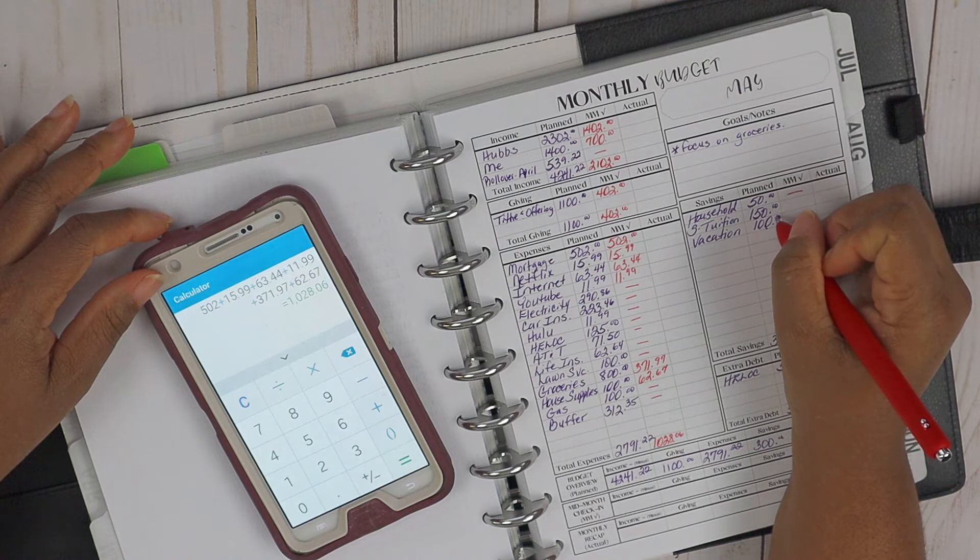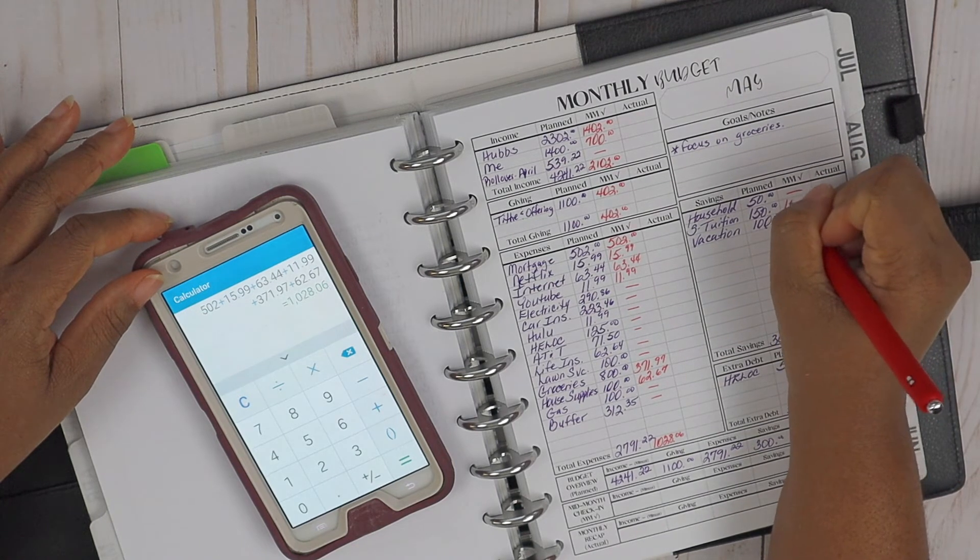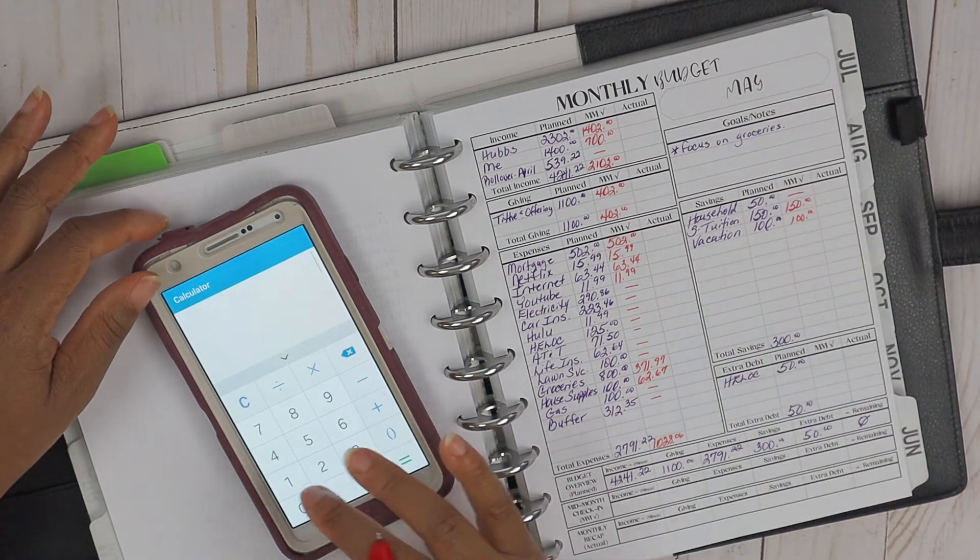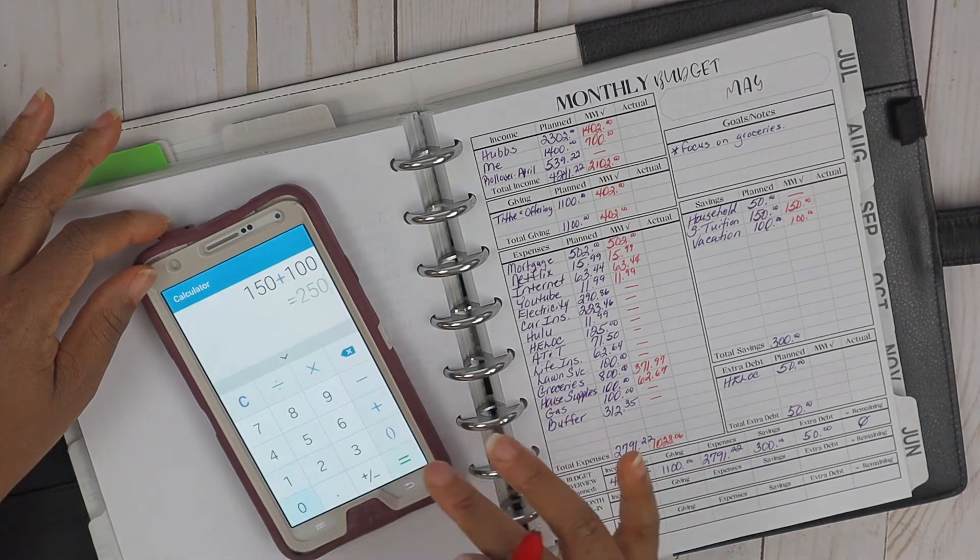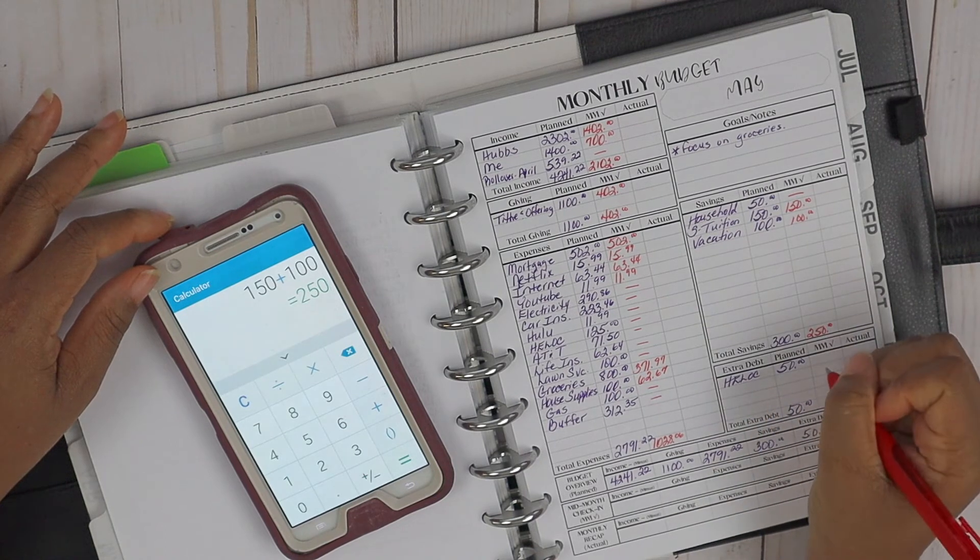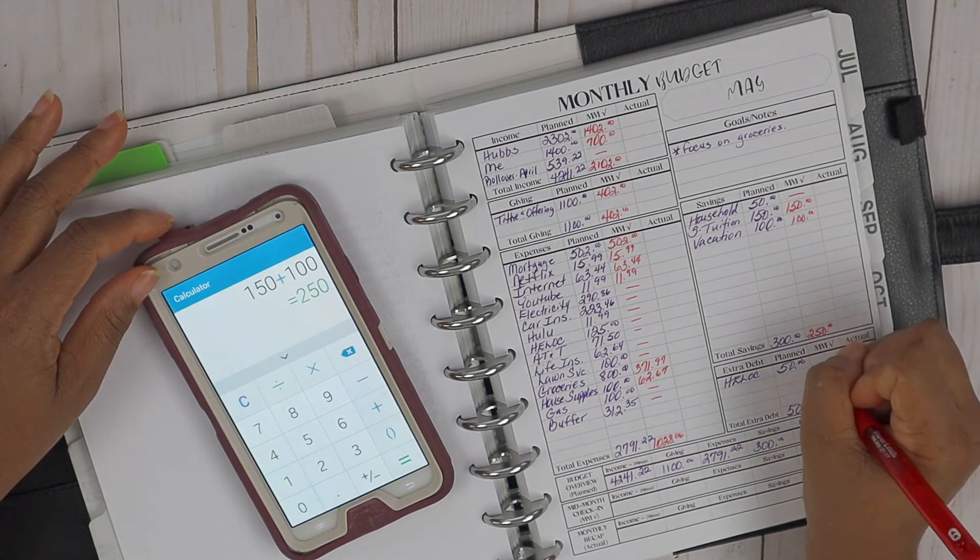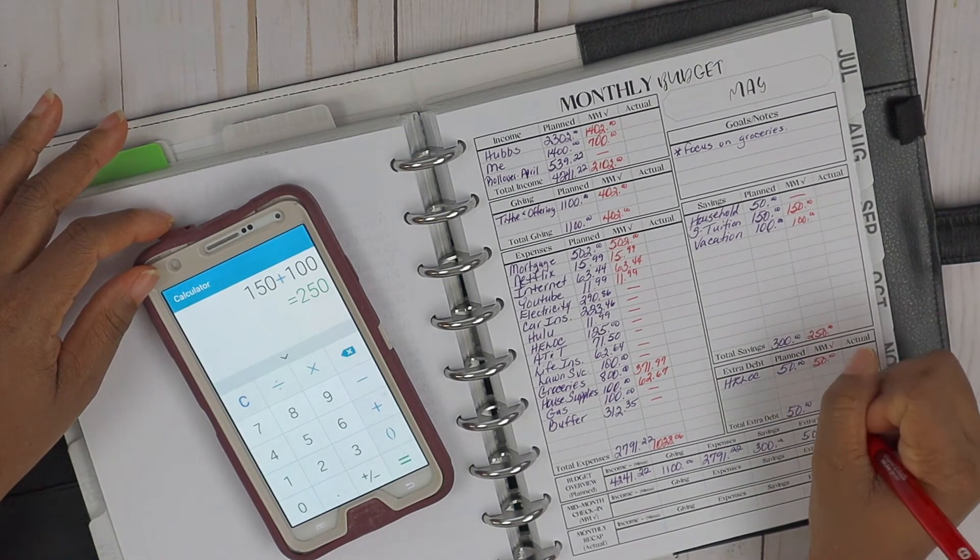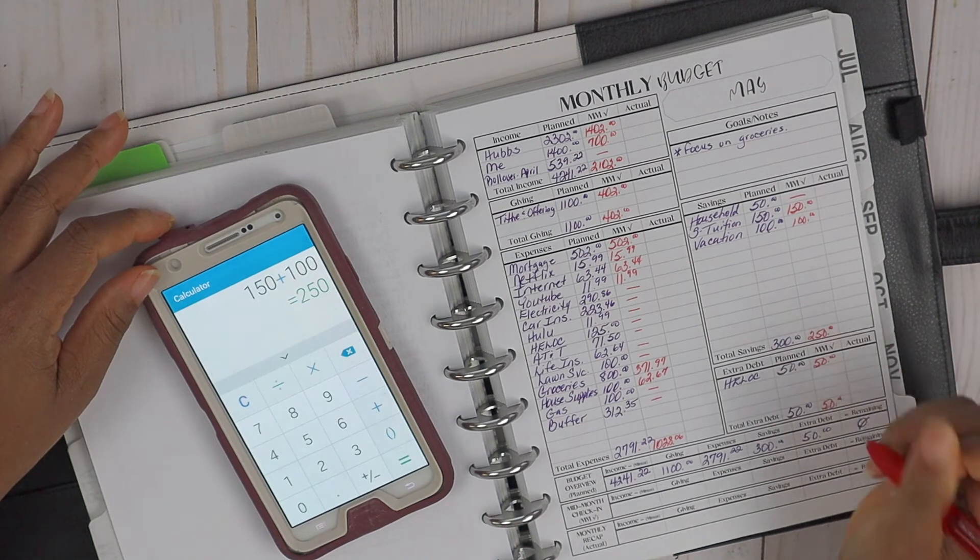But the son's tuition and vacation, they were taken care of, so those totals are $150 and $100, $250 thus far. And then for our HELOC extra debt, the $50 at mid-month, that was set aside.